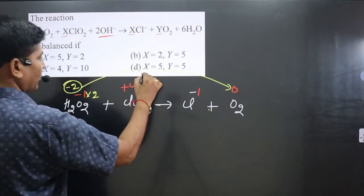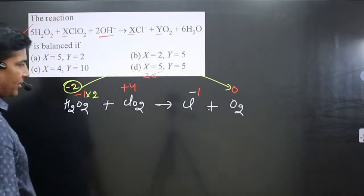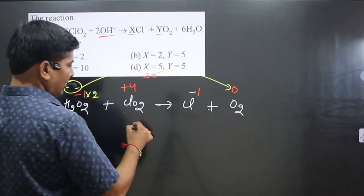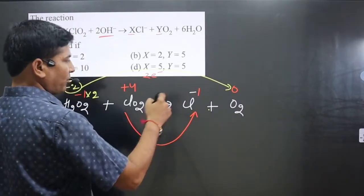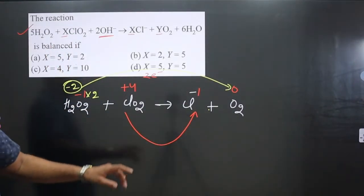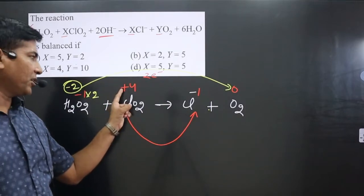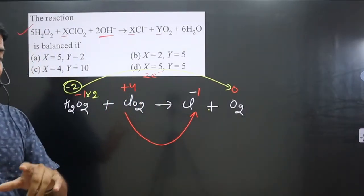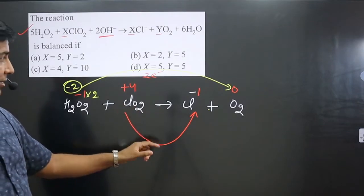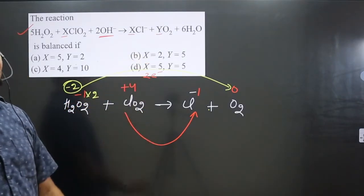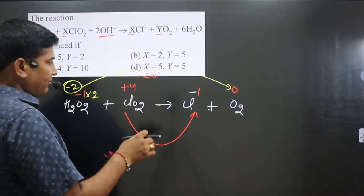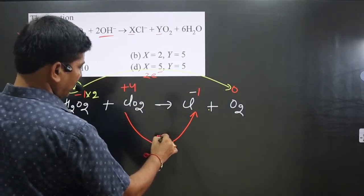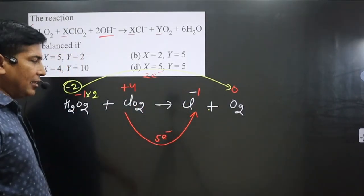Now we compare the oxidation number of Cl. It changes from +4 to -1, which is a decrease in oxidation number — a reduction reaction. Finding the difference: 4 minus (-1) = 5 electrons.